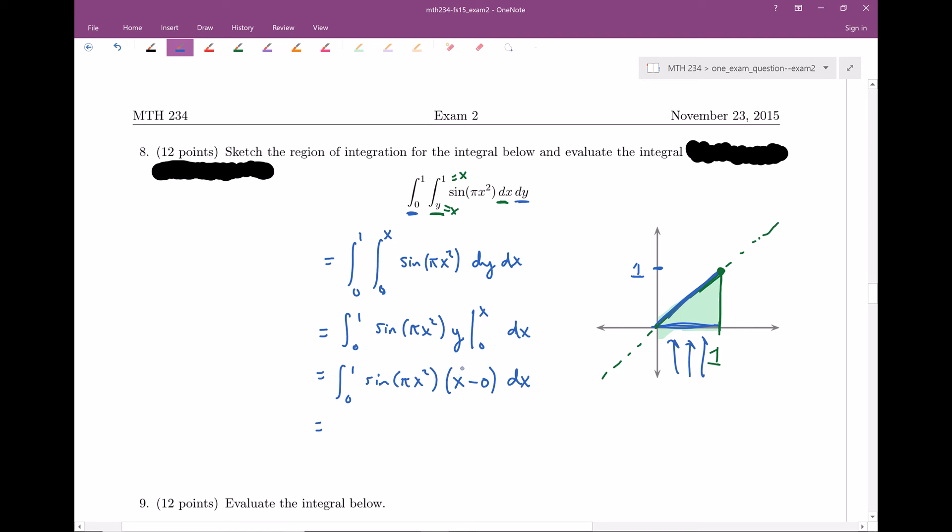Because now we're going to use a u substitution. This is going to be u equals π x squared. So therefore, du is going to be equal to 2π x dx. And you can see here that I have an x dx. So let's go ahead and maybe solve for x dx. I can go ahead and trade that in for a du over 2π, once I divide by that 2π there. So let's go ahead and switch this up. This is going to be sine of u, and then we're going to have a du over 2π.